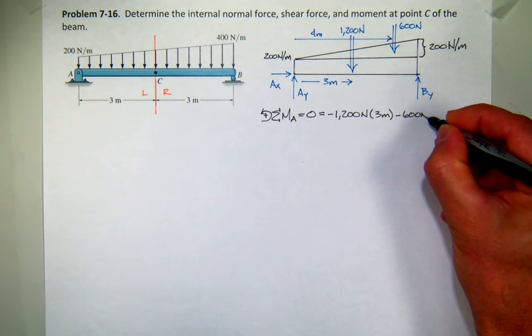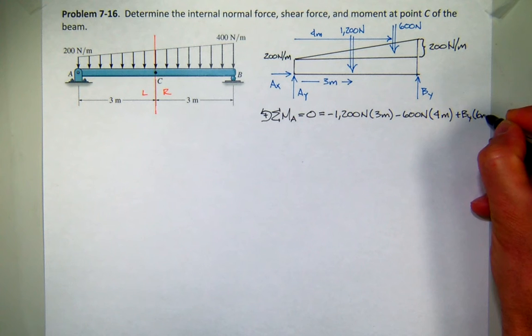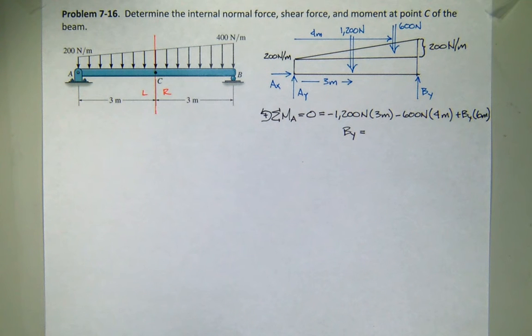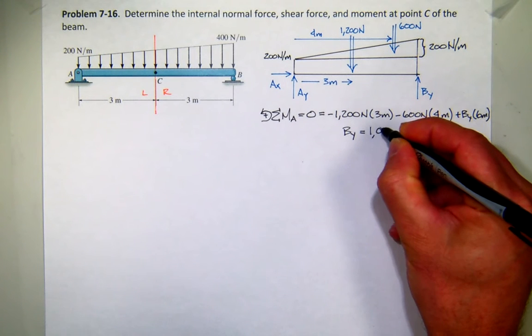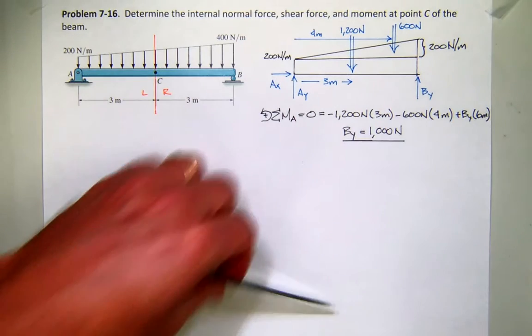So my 1,200 will have a 3-meter moment arm, and then the 600 newton will have the 4-meter. And then BY at the end will have 6 meters. So we should be able to find BY. What did you guys get? 1,000. Does that sound right?